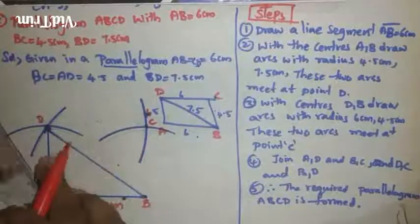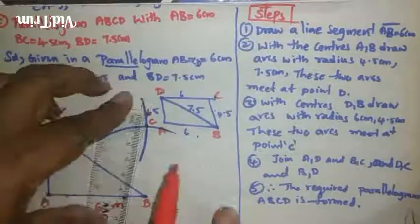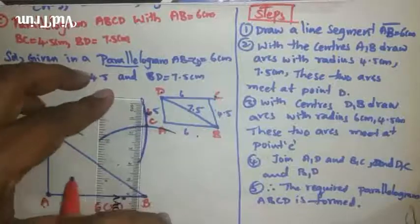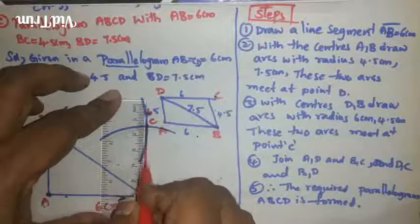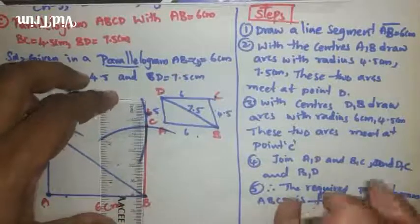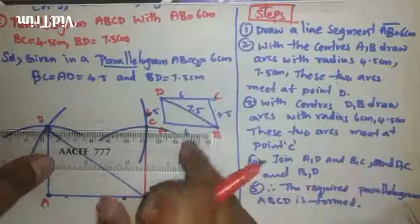These two arcs meet at a point C. Now let us join BC. One triangle is over, the other triangle we are constructing. When diagonal is given, we should construct two triangles. Join B to C, next C to D.